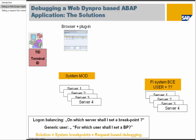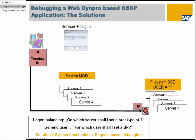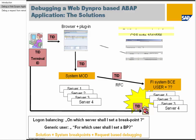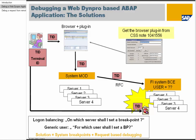The idea is that a GUID — a Terminal ID — is stored on the terminal, a laptop in this case, and this Terminal ID is saved along with the breakpoint. When the WebDynpro application is started from this laptop, the Terminal ID is sent with the request via a browser plugin, through the browser, then through the backend MOD, and lastly to the Booking System BCE. This Terminal ID is sent with every RFC, and the debugger starts once the Terminal ID of the request matches the Terminal ID of the user breakpoint, functioning irrespective of servers. The required browser plugin for Internet Explorer is shown here.